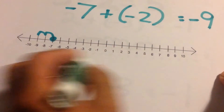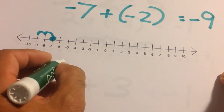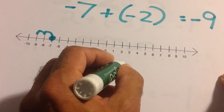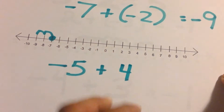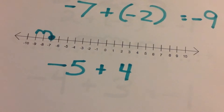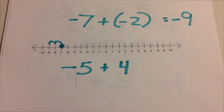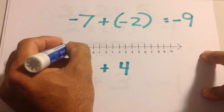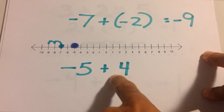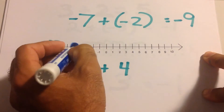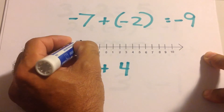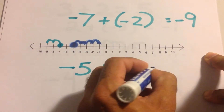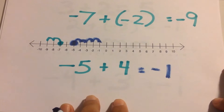Try this one on the number line: negative five plus four. Start at negative five. It's positive four, so we go to the right — one, two, three, four — and we get negative one.